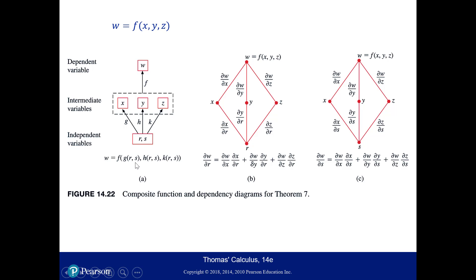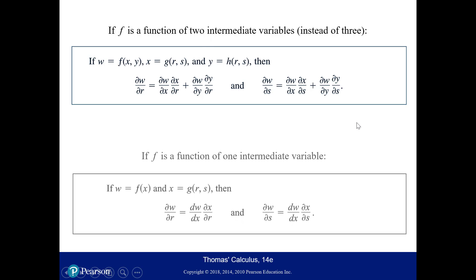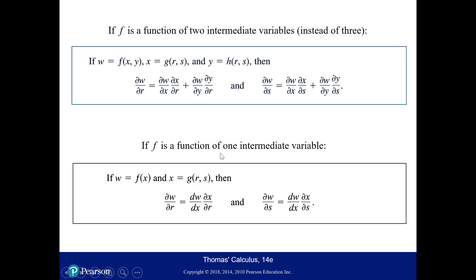If f is a function of two intermediate variables instead of three, but we still have two independent variables, the chain rule simplifies — the third term drops out. If the function is of only one intermediate variable, the chain rule gets even simpler. Here's the dependency diagram for the one-variable case.